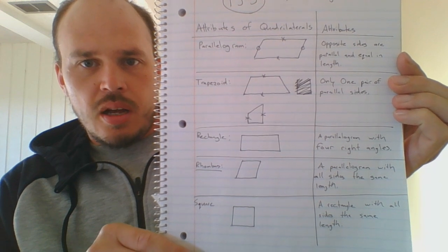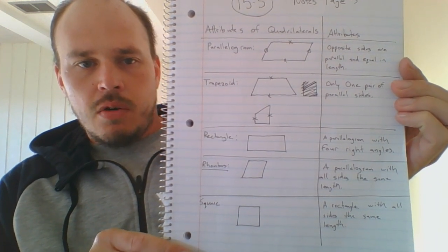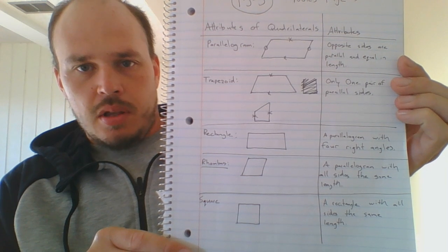Today, you'll learn about the attributes of quadrilaterals. The quadrilateral is a four-sided polygon.